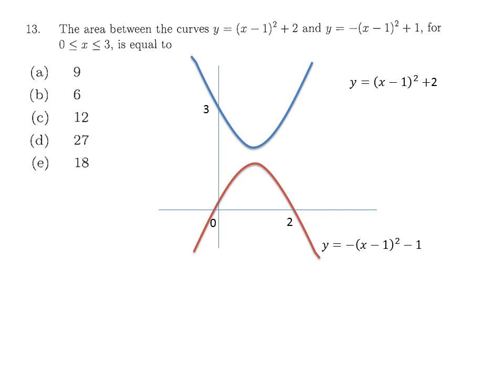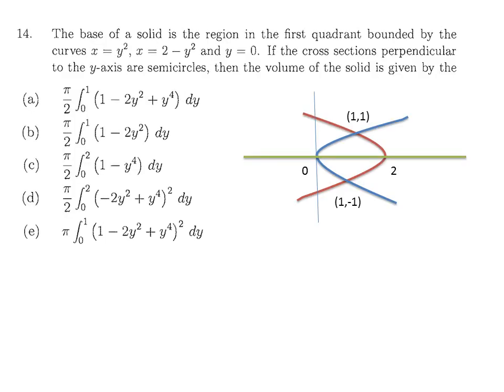Question 13 asks for the area between two curves from 0 to 3, even though there is no common enclosed region. We integrate the upper curve minus the lower curve, resulting in a simple polynomial expression. Evaluating and plugging in the upper and lower limits gives a final answer of 9/14.